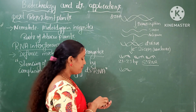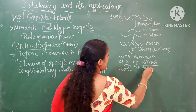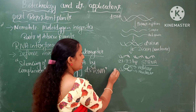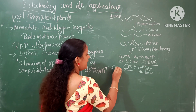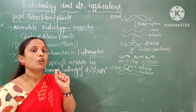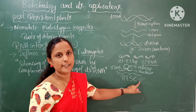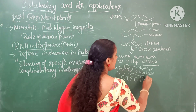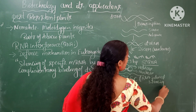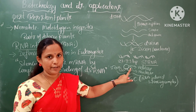To these small interfering RNA sequences, an additional helicase and nuclease enzyme complex binds. Together, the siRNA sequences along with this helicase and nuclease form a complex called RNA-Induced Silencing Complex, or RISC.